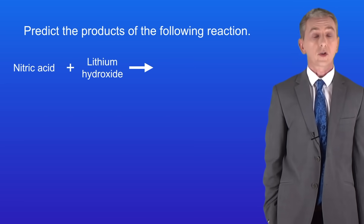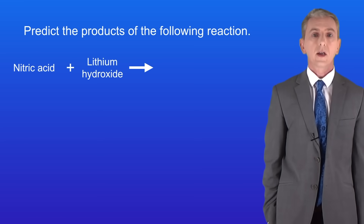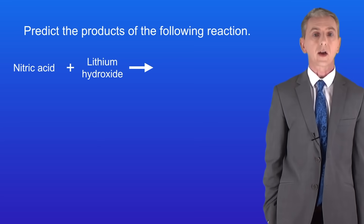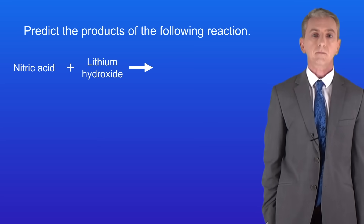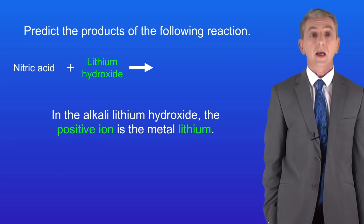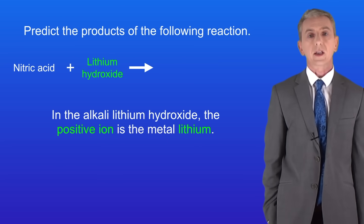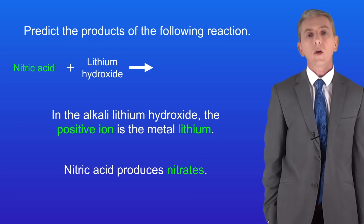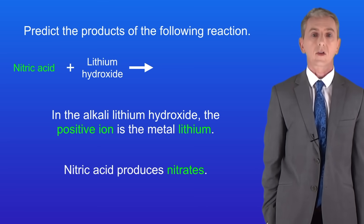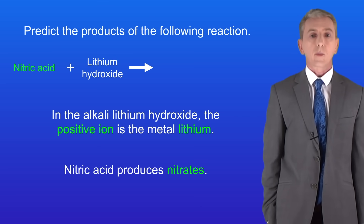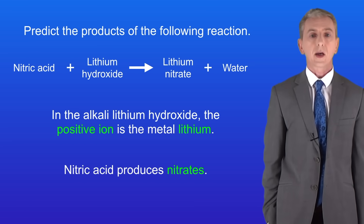Here's another question for you to try: predict the products of the following reaction — nitric acid plus the alkali lithium hydroxide. Pause the video and try this yourself. In the alkali lithium hydroxide the positive ion is the metal lithium. We know that nitric acid produces nitrates, so that means that our products must be the salt lithium nitrate and water.